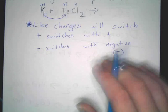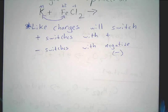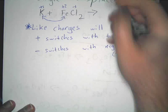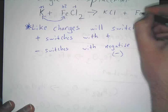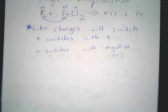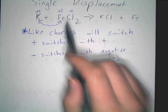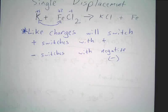For now, we know that potassium is higher up, so something will switch. Our result will be potassium bonded to chlorine, and iron is kicked out on its own. K and Fe traded places — they don't bond, they switch.